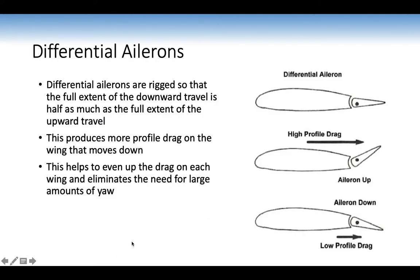Differential ailerons are rigged so the full extent of down travel is half as much as full upward travel. Rolling left, the down-going aileron fully deflects upwards but the up-going aileron only deflects down half as much. This produces more profile drag on the wing that moves down, evening up the drag on each wing and eliminating the need for large amounts of rudder — similar in principle to Frise ailerons.